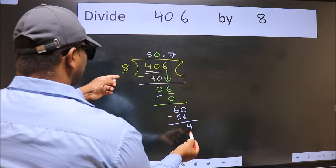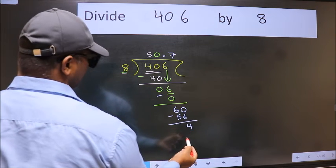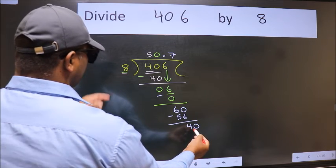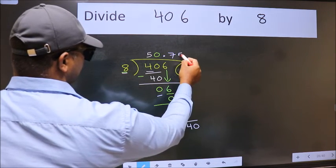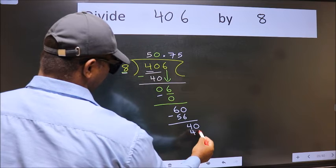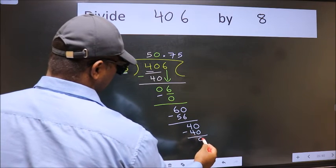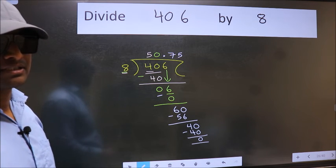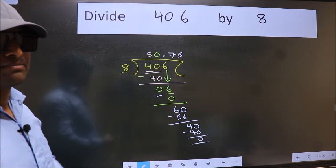4 is smaller than 8, and we already have the decimal, so directly take 0. When do we get 40? 8 fives 40. Now we subtract, we get 0. Did you understand where the mistake happens? You should not do that mistake.